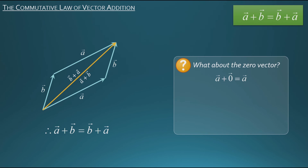In other words you'd end up with the magnitude and direction of vector a. So we could say that vector a plus the zero vector is vector a. And similarly if you start with the zero vector and add vector a, again you'll get vector a as your resultant. Because the zero vector has no magnitude and no direction, so if you add vector a to it, you'll get the magnitude and direction of vector a. In other words the zero vector plus vector a equals vector a. So notice that a plus the zero vector is a and the zero vector plus a is a. So we can conclude that a plus the zero vector is the same as the zero vector plus a. That is, the commutative law of vector addition is true if one of the vectors is the zero vector.